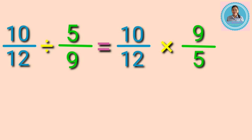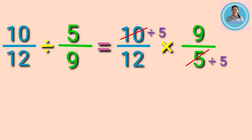Now let's do the multiplication. We can use the cancellation method before multiplying. Let's divide ten and five by their GCF. The GCF of ten and five is five. So ten divided by five equals two, and five divided by five equals one.